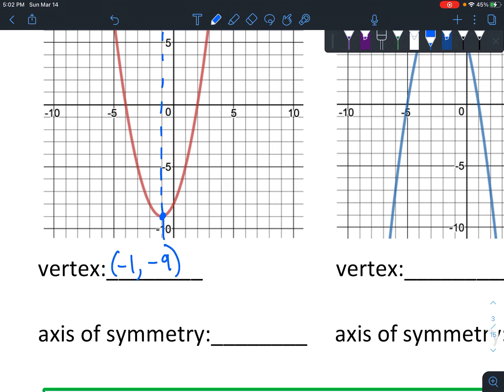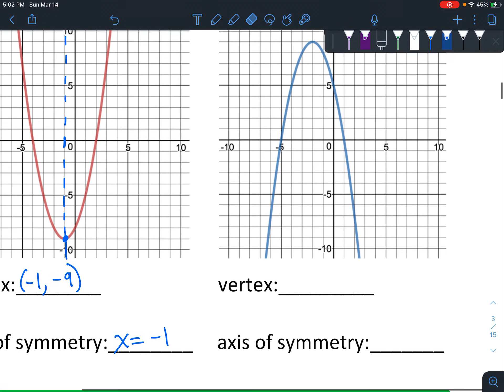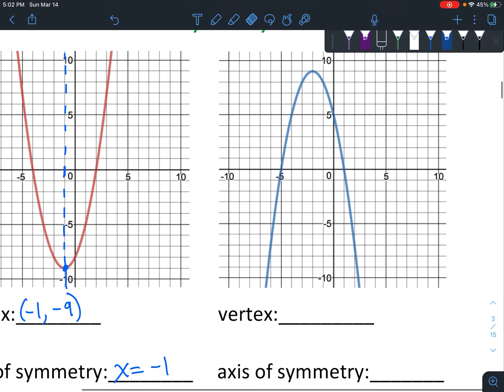And then the axis of symmetry is an actual line. You can say x equals and whatever, wherever it hits the x-axis. So right here it hits negative one, which is going to be that axis of symmetry. And notice that the x in the vertex and the axis of symmetry are the same numbers. That can also help you get these done quickly.